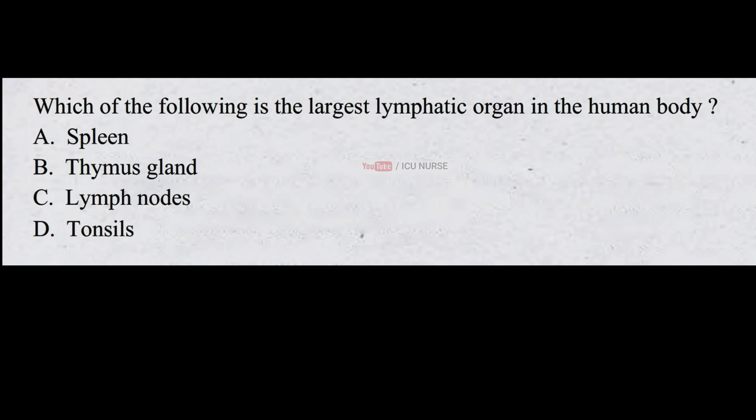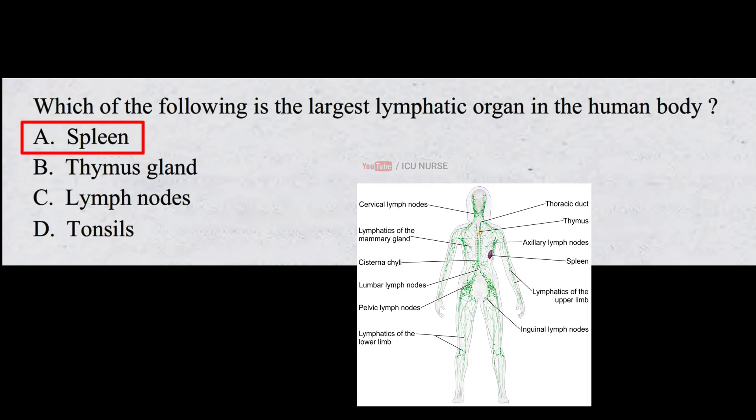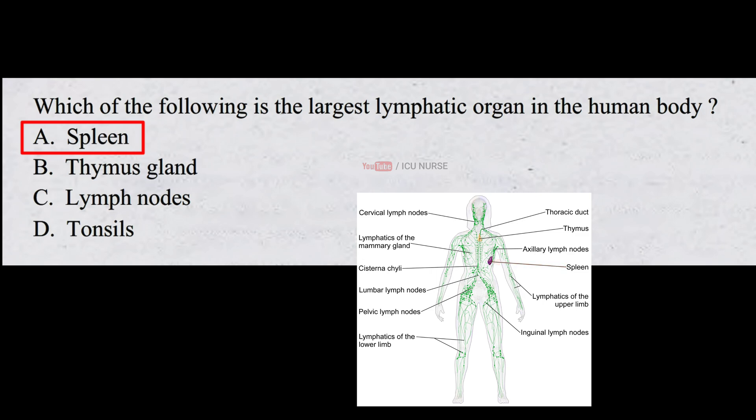Which of the following is the largest lymphatic organ in the human body? A. Spleen B. Thymus gland C. Lymph nodes D. Tonsils. The correct answer is A. Spleen. Spleen is the largest lymphatic organ in the human body.